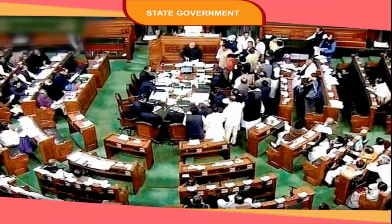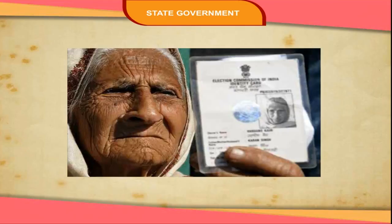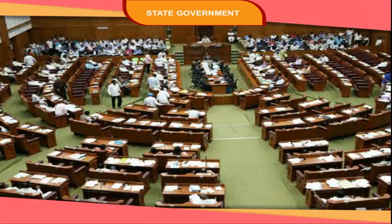The members of the Vidhan Sabha are elected directly by the people of the state. The qualification of the members and their tenure are similar to the members of Lok Sabha. Elections are based on universal adult franchise, meaning that all persons above 18 years of age have the right to vote. The system of secret ballot is followed. The Legislative Assembly is elected for a period of five years.